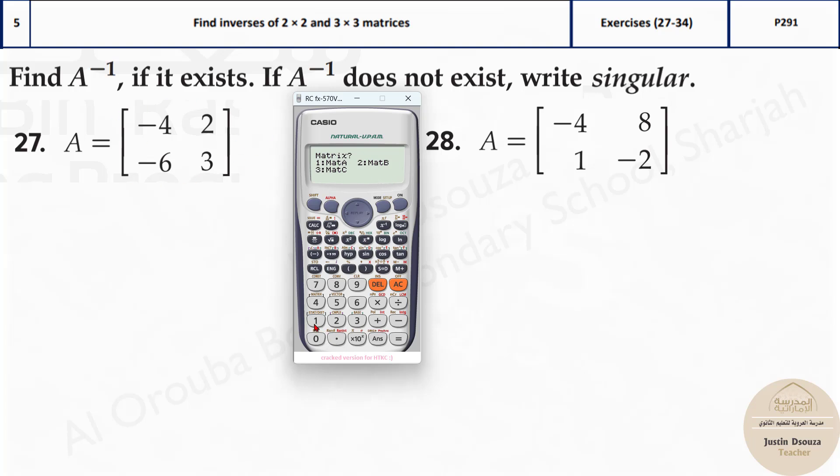Press matrix A that is option number 1 and look at the dimensions of this matrix. It's 2 x 2. Two rows two columns right. 2 x 2 is option number 5 and type the matrix in. Negative 4 then press equal to.